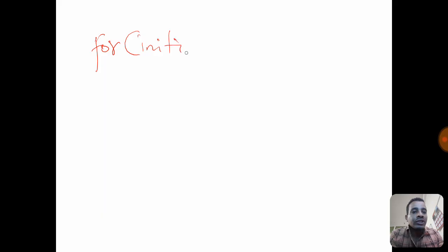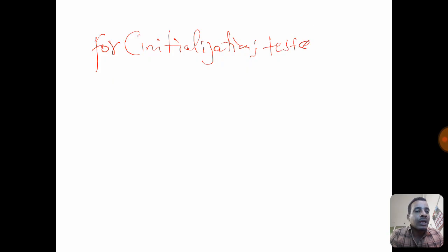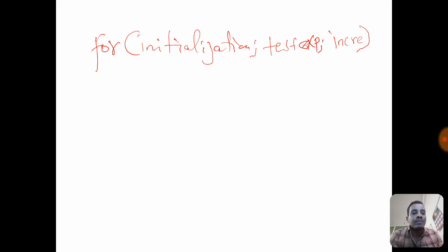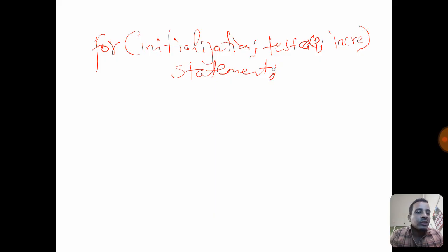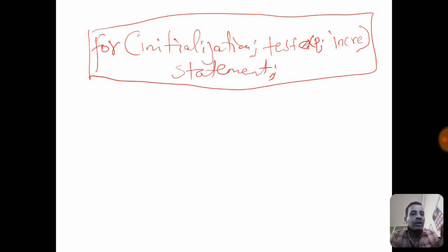For a for loop, we have initialization, semicolon, test expression, semicolon, increment, semicolon, then brackets and the statement inside. For example: initialization; test expression; increment — then the statement, such as a plus b.